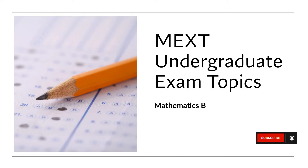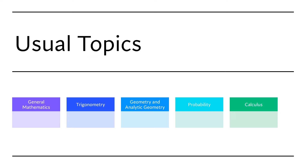This is the mathematics for natural sciences. For Mathematics B, I think I can classify the topics according to these five categories: general mathematics, trigonometry, geometry and analytic geometry, probability, and calculus. I noticed that usually at the end of the paper there will be some calculus problems, and at the beginning there will be some general mathematics questions, so I want to talk about these in this order.